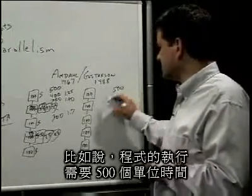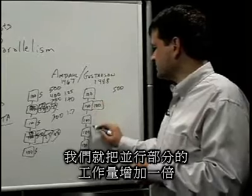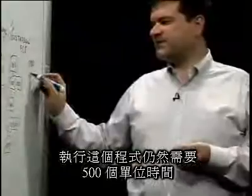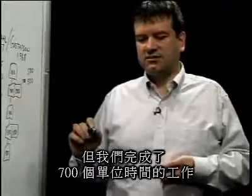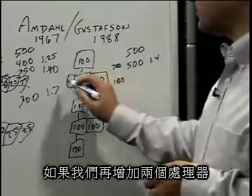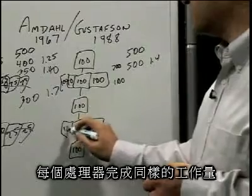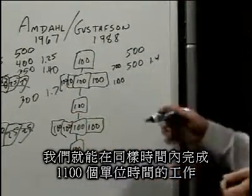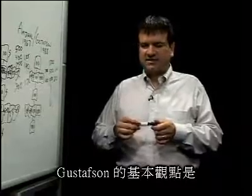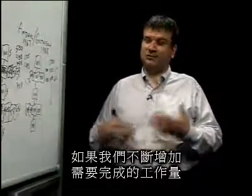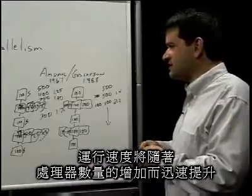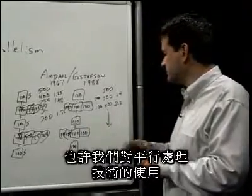So if we take a different look at our program that ran in 500 units of time and double the amount of work done in the parallel sections, we can get 200 units of work done in the same time. The program still takes 500 units of time to execute, but we get 700 units worth of work done — that's a 40% speedup with just two processors. If we continue this trend and add more processors, we can get 1,100 units of work done in 500 units of time — a 2.2x speedup.